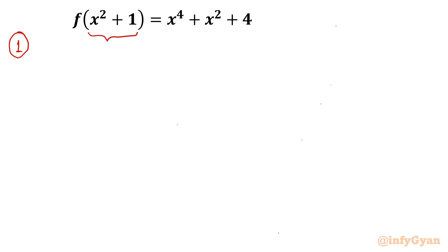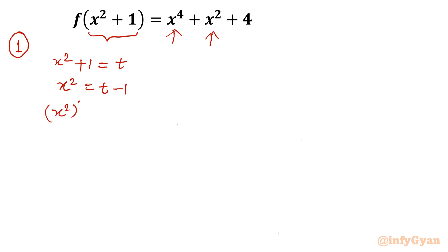I will substitute x² + 1 = t. Once x² + 1 = t, then we can write x² = t − 1. If you notice, our RHS requires x⁴ and x², so there's no need to find x directly. I will square both sides to calculate x⁴, which gives x⁴ = (t − 1)².